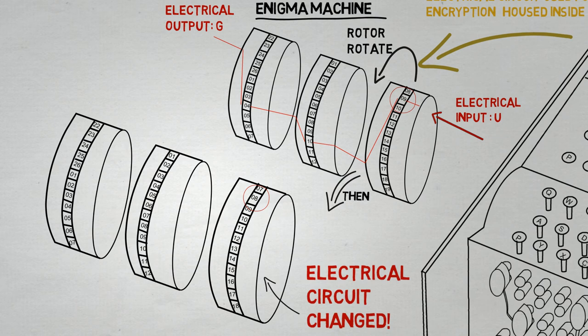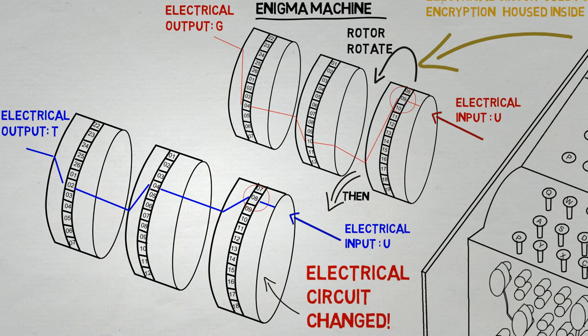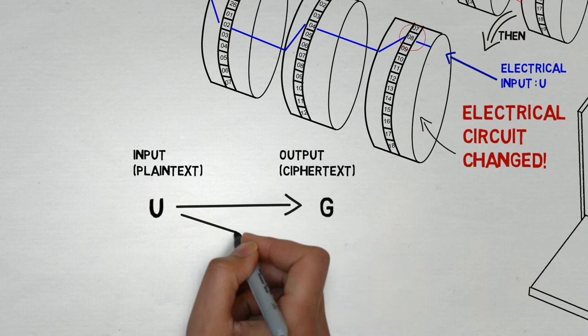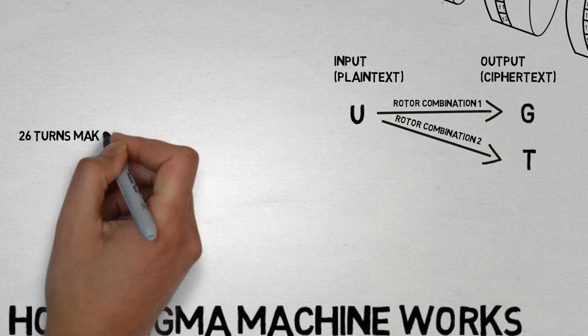During this process, the rotor turns once and changes the electrical connection. If the U button is pressed again, it will give a different output T instead. It is possible to substitute the same letter with different letters because each time the rotor rotates, the entire coding system of the Enigma machine changes.